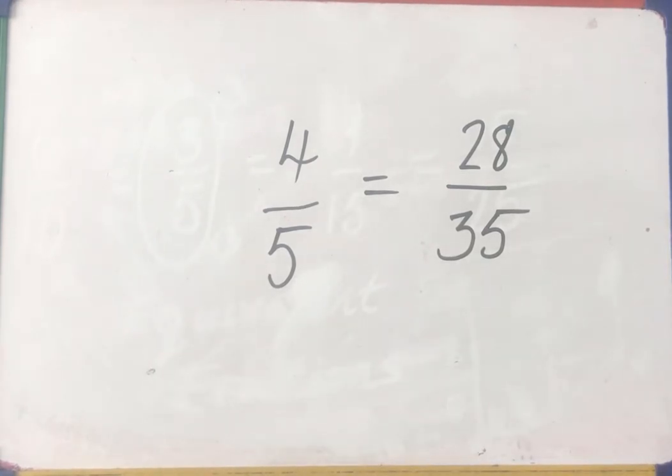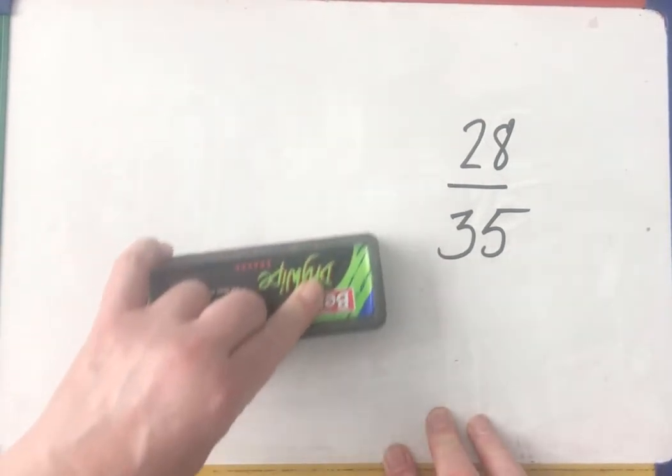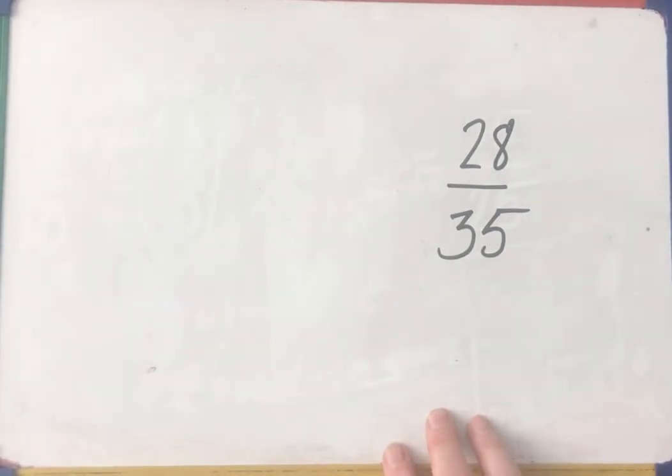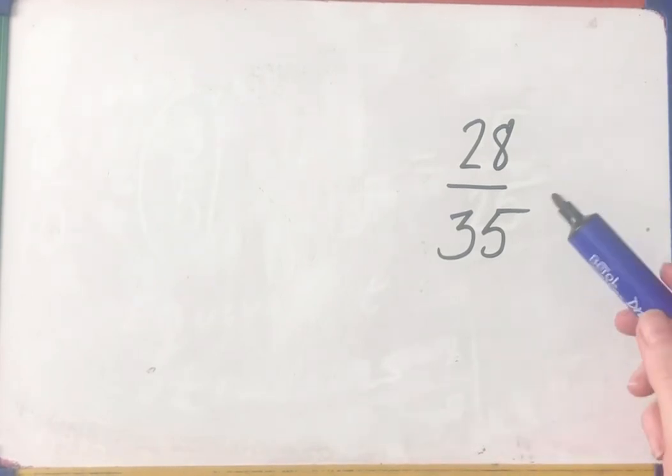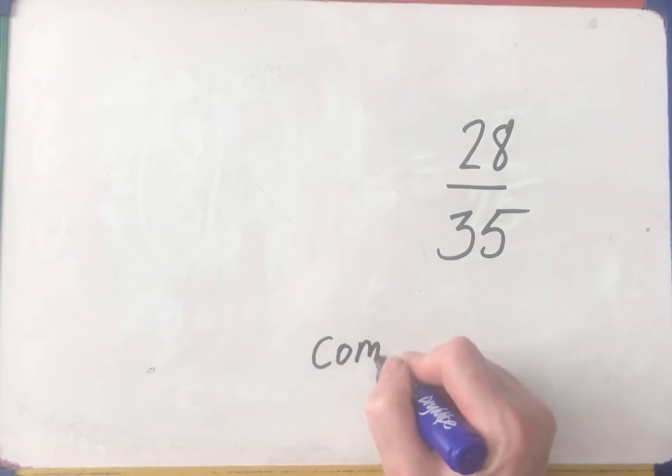If I was just given 28/35 and I didn't have 4/5 and I needed to know what it was in its simplest form, I have to find something in the times table. I have to find a common factor.